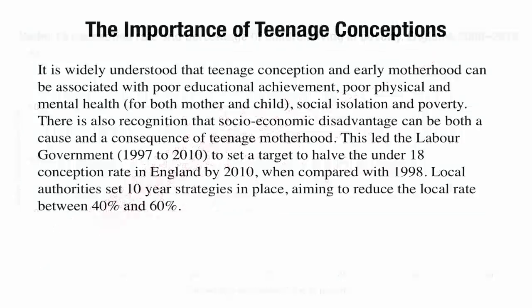The statisticians are being careful not to overstate their case — they say there's an association but don't tell us what's causing what, and they say explicitly the cause could work either way. The underlying question of whether young mothers and their children are better or worse off as a result of an early birth is something these statistics can't easily answer, partly because it involves value judgments that statisticians are not well placed to make. The ONS also notes that teenage conceptions can be the result of planning within established relationships and are not always a cause for concern.